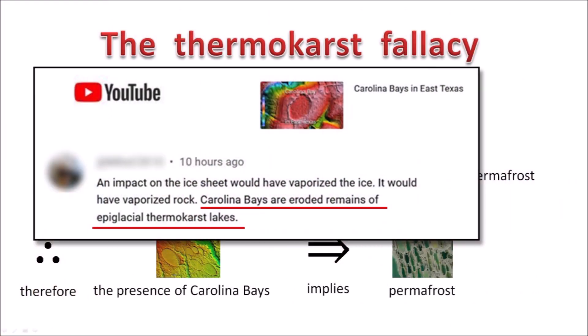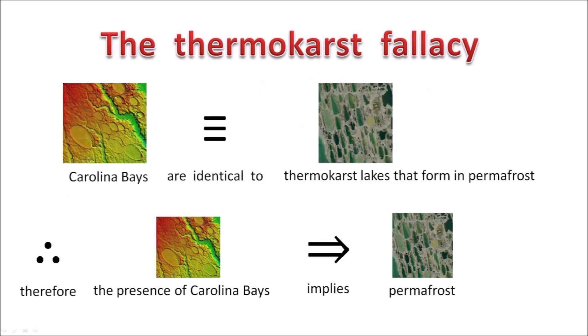The statement that the Carolina Bays are the eroded remains of epiglacial thermokarst lakes is another misconception. It is based on the Thermokarst Fallacy, which proposes that the Carolina Bays are identical to thermokarst lakes that form in permafrost, and therefore the presence of Carolina Bays implies the presence of permafrost at an earlier time.